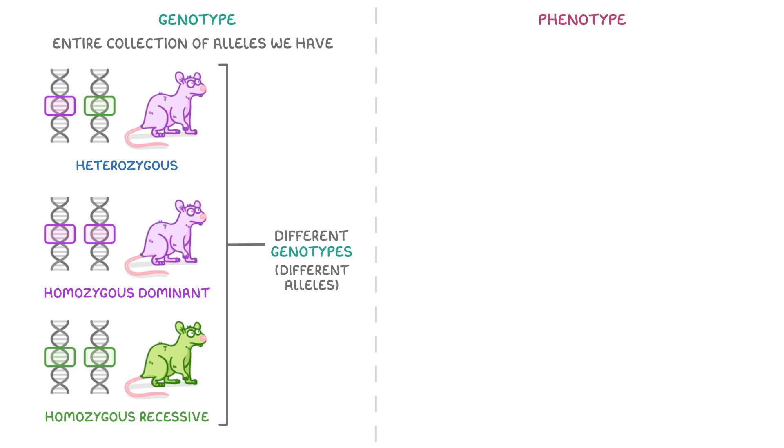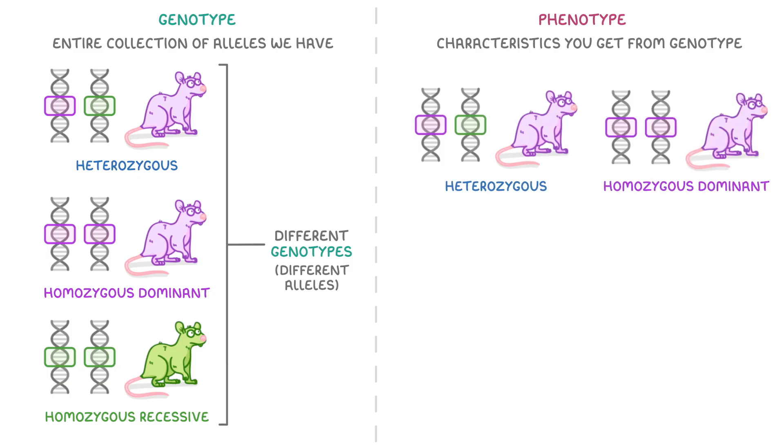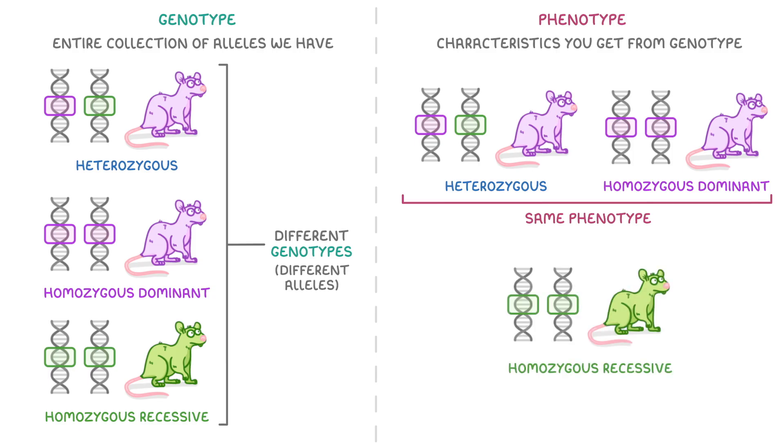However, your phenotype is the characteristics that you get from your genotype. So as both the heterozygous mouse and the homozygous dominant mouse are purple, we would say that they have the same phenotype, even though they had different genotypes. Meanwhile, because our homozygous recessive mouse is green rather than purple, it has a different phenotype as well as a different genotype.